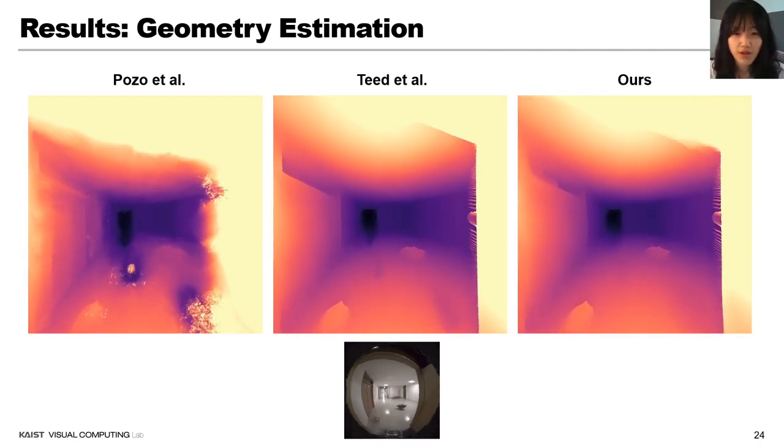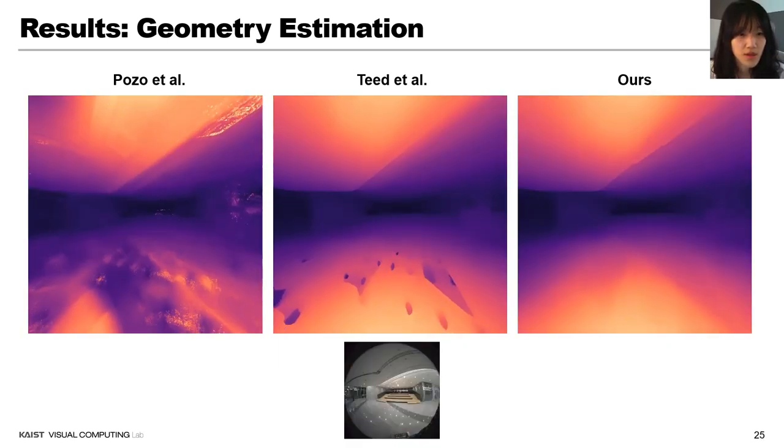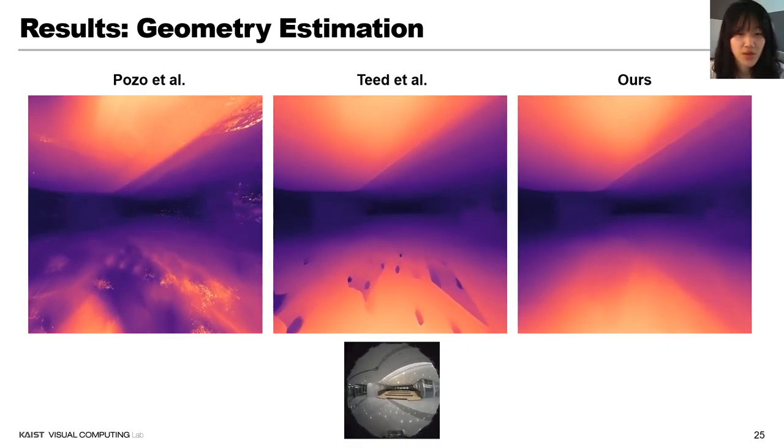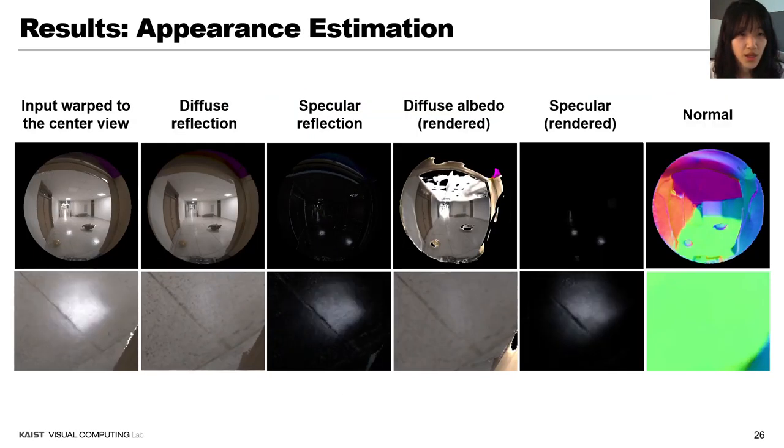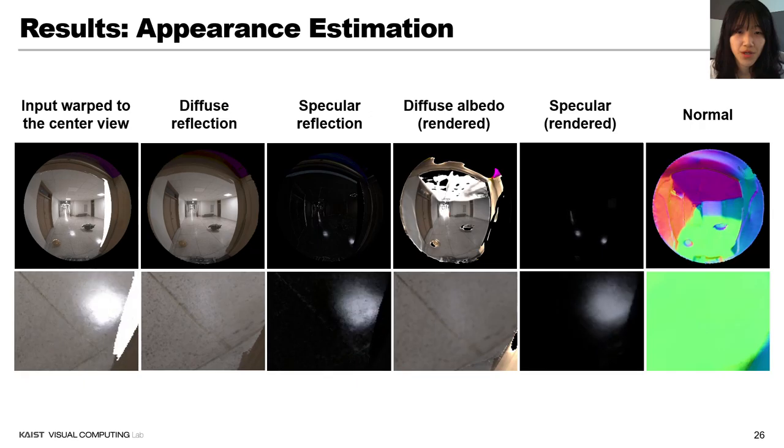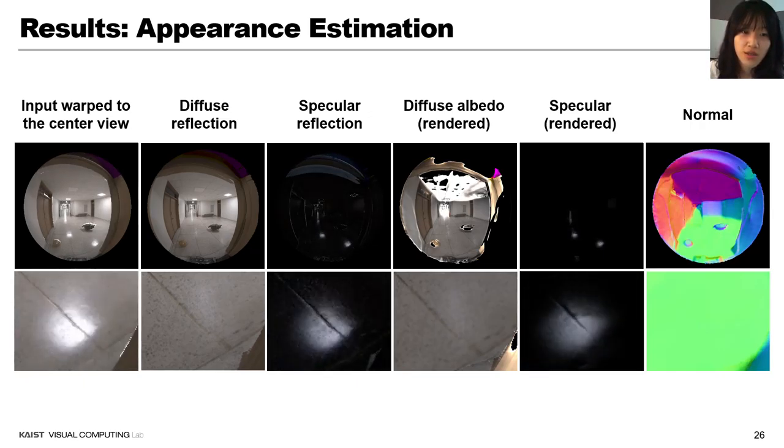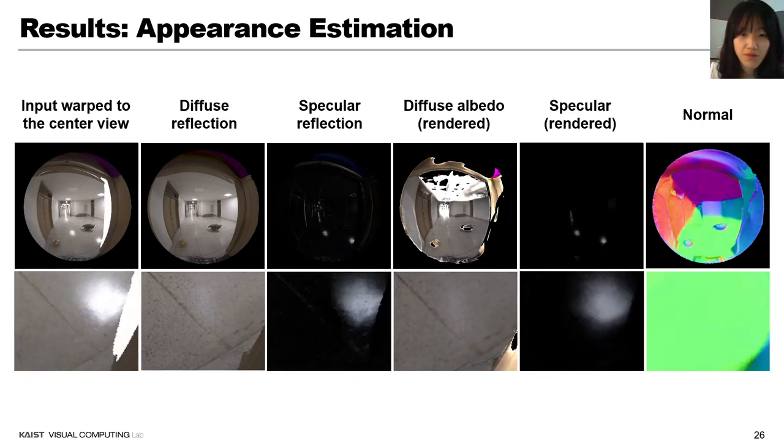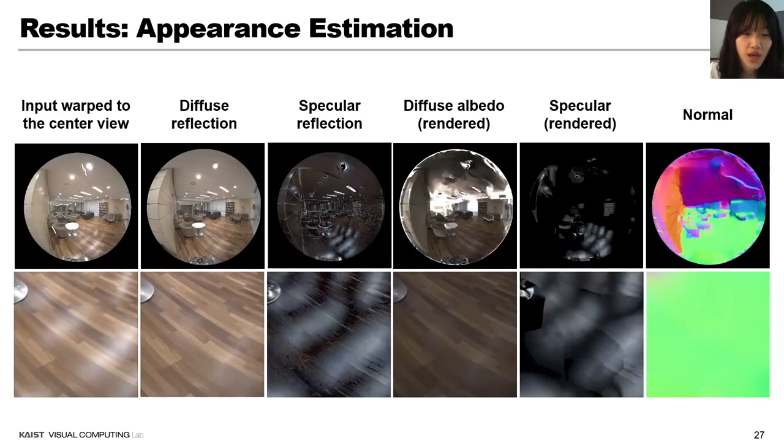However, Pozo et al. presents artifacts on specular reflection, where the photometric consistency assumption breakdown. Teed et al. shows inaccurate depth estimation on the specular reflection on the floor. And our method demonstrates smooth depth refinement on that region. Now, we demonstrate another result from a scene with a strong specular reflection.